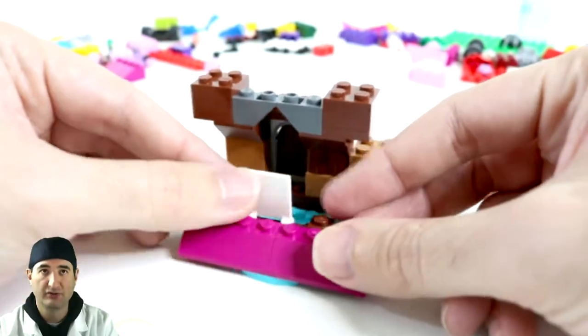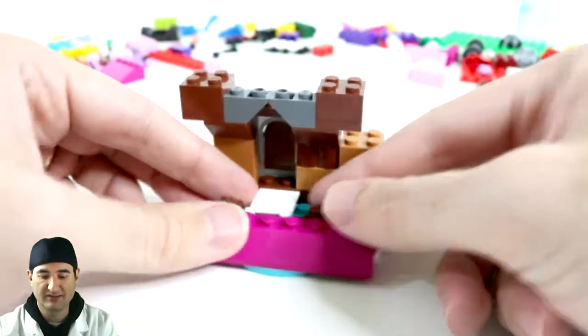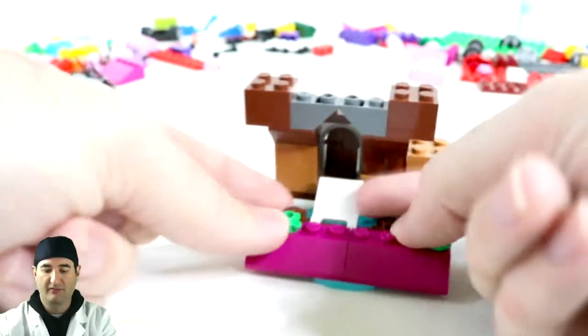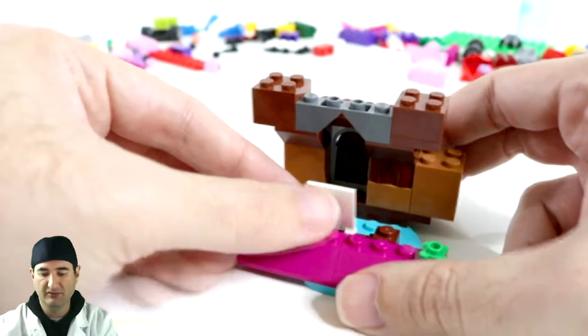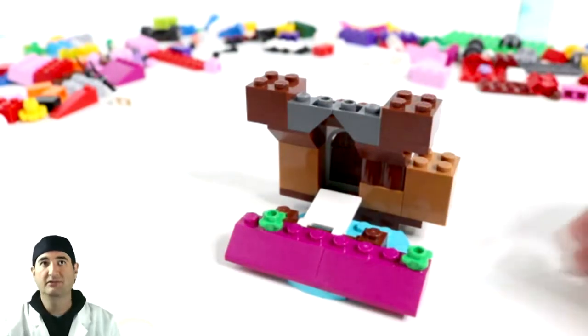So this is a Lego drawbridge. It goes up when you don't want people to get into your castle and it goes down when you want people to travel into your castle.